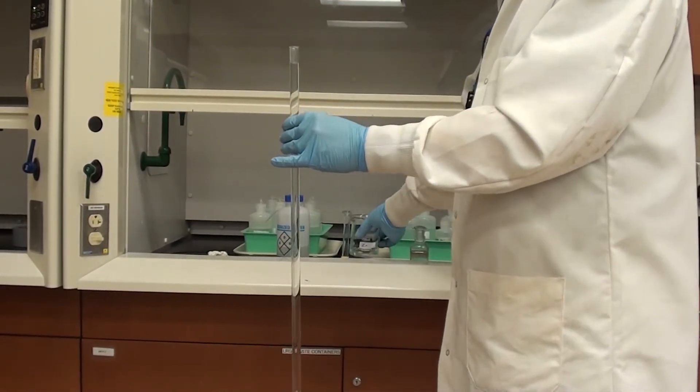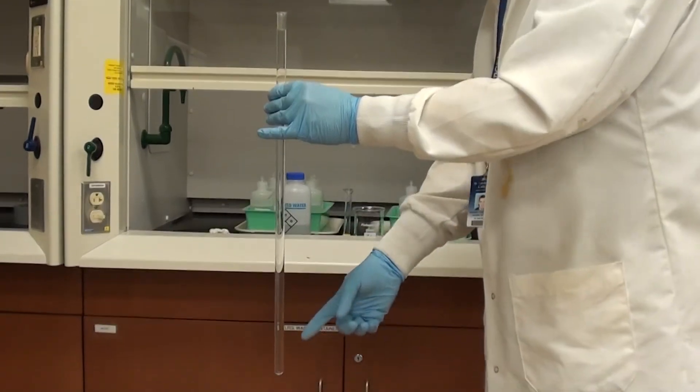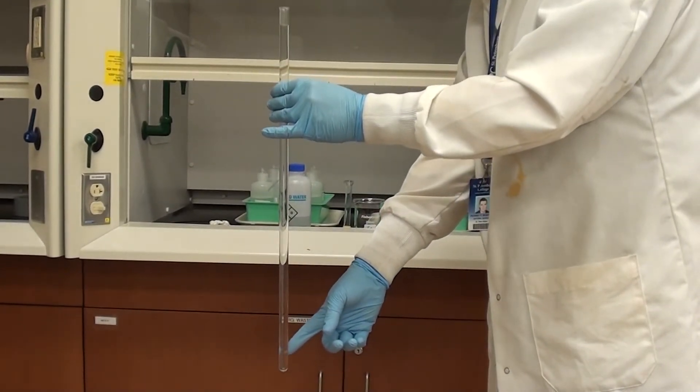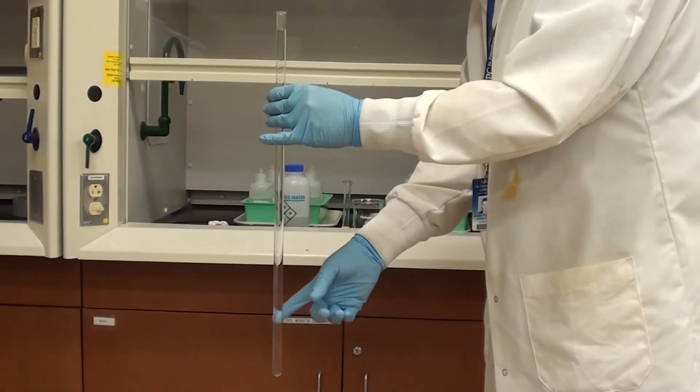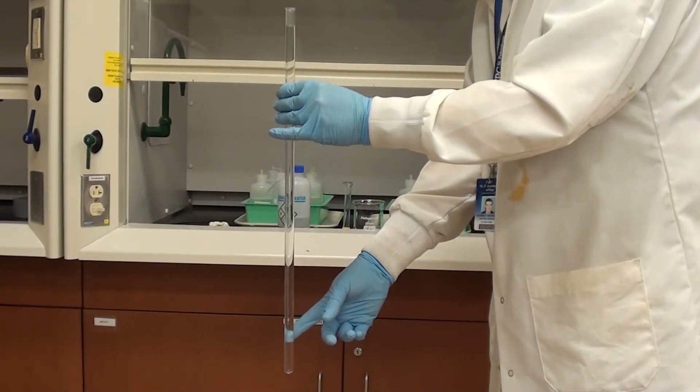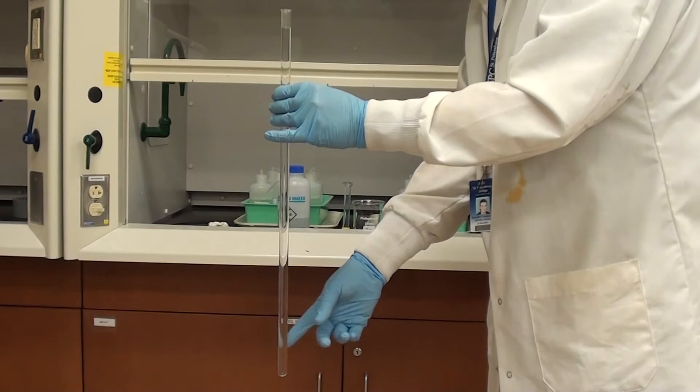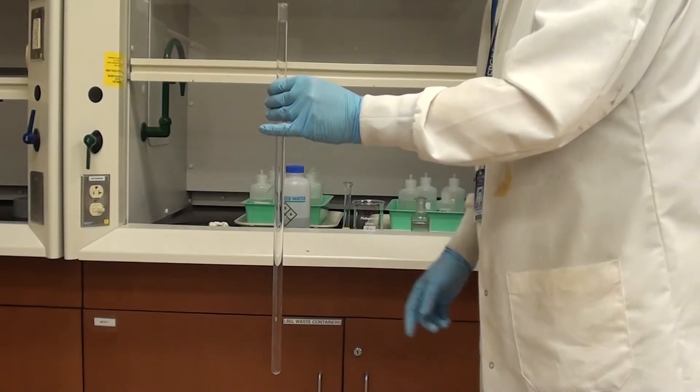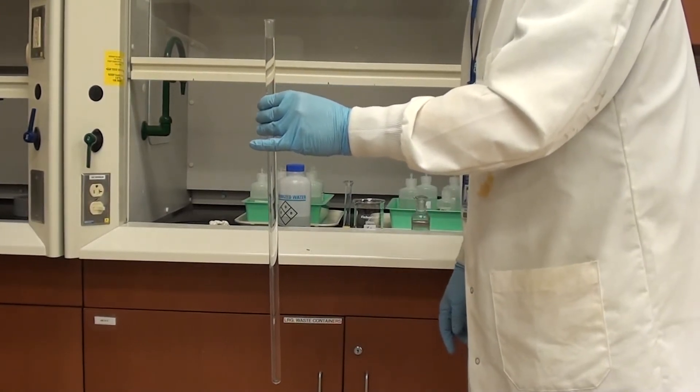So that should do it. Now what I want you to see here is you can kind of see the layer. You've got the HCl on the bottom, you've got the water on the top and there's the, it's not really a phase separation per se but you can see that there is a separation between the two. And that's exactly what we're looking for for the next step.